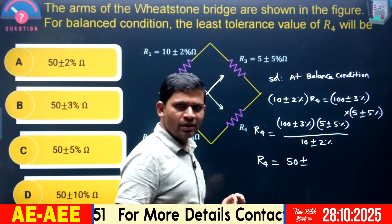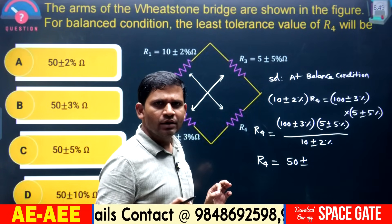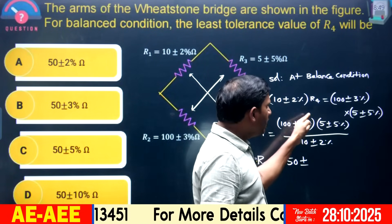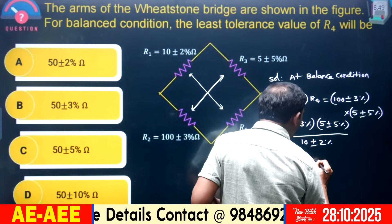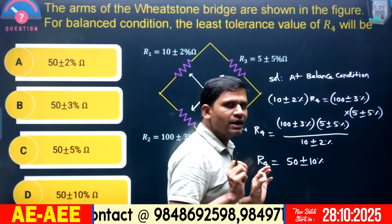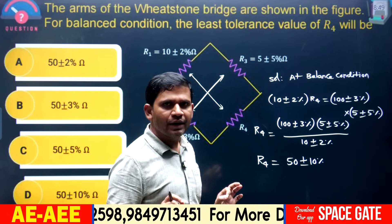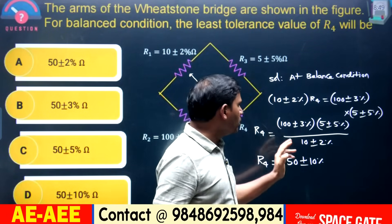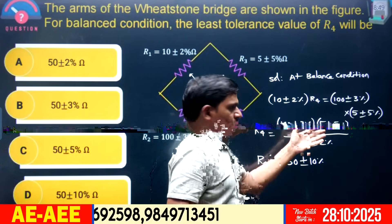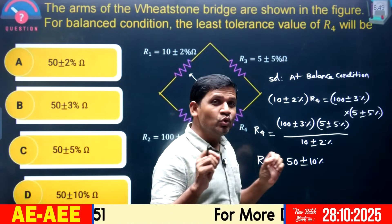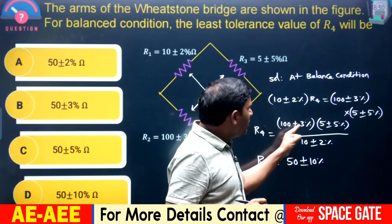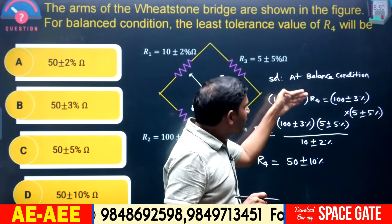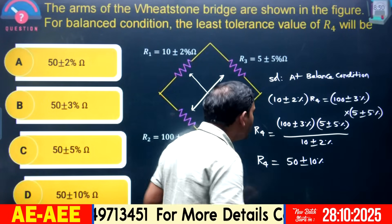In multiplication, percentage errors are added. In division, percentage errors are also added — do not multiply errors. For the numerator: 3% + 5% = 8%. For the full expression (dividing by the denominator): 8% + 2% = 10%. Therefore R4 = 50 ± 10%.